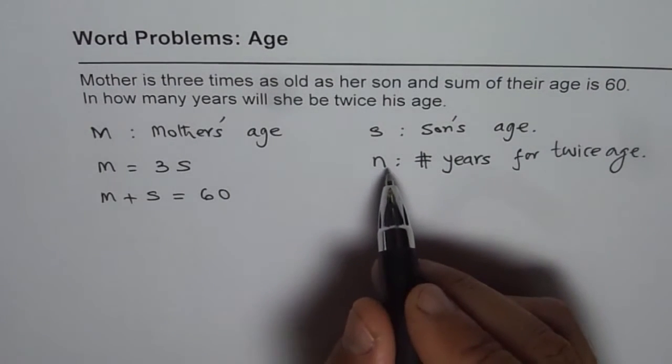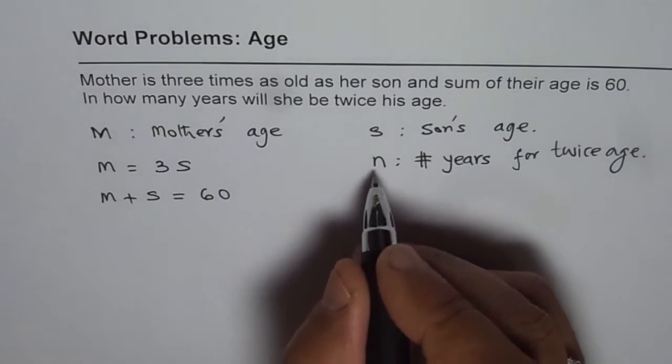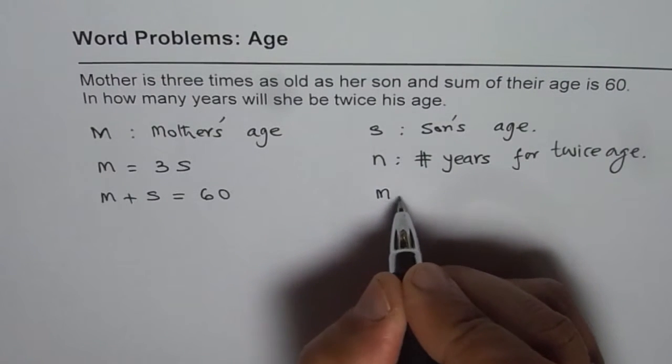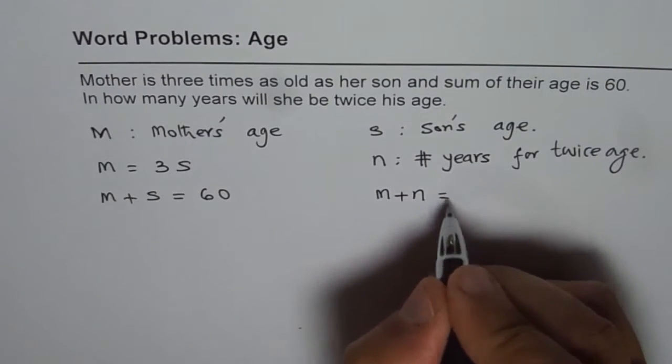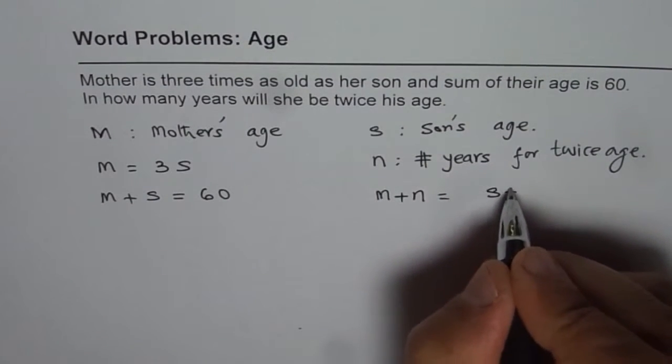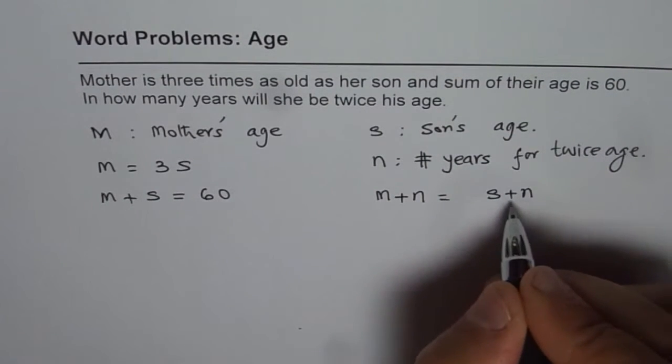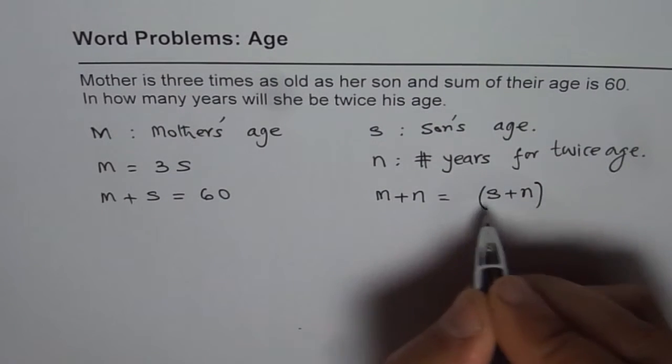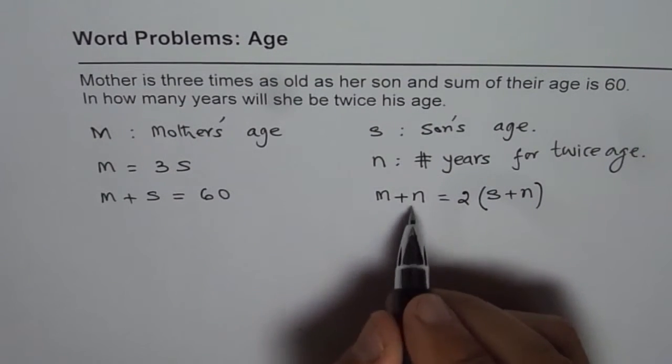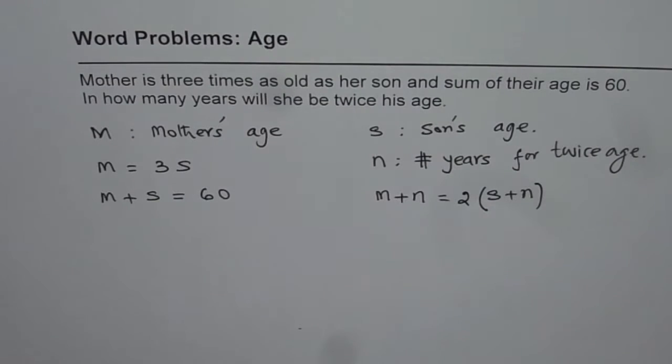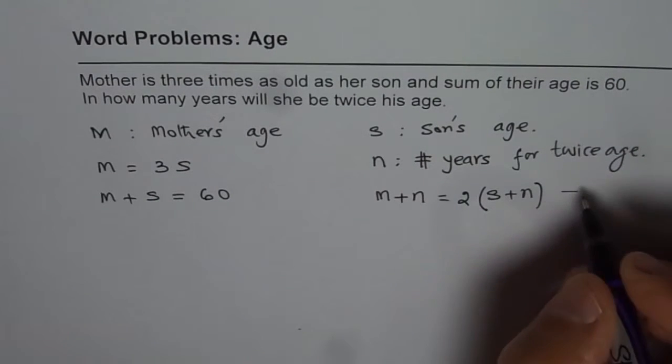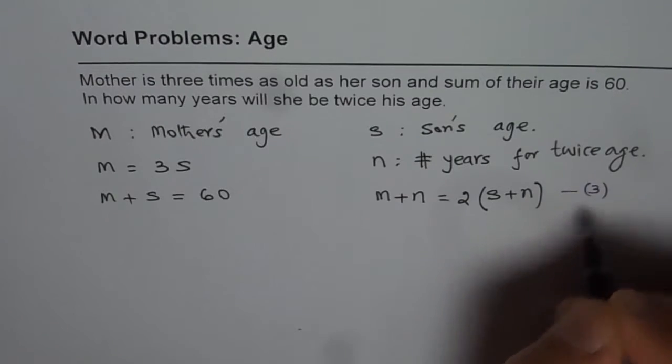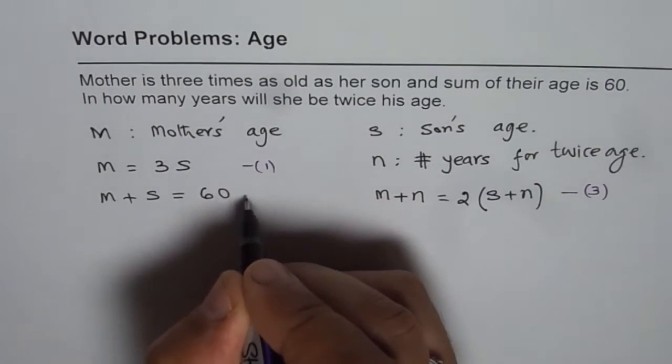After N years, what is going to be the age of mother? After N years, age of the mother will be M plus N. And the son will be S plus N. When we say twice, that means two times. So mother's age is going to be two times son's age. So that becomes our next equation. We will call this equation 3. We already have 1 and 2.